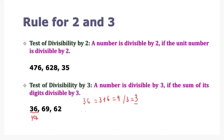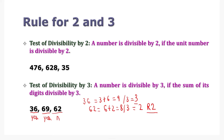What about 69? We add 6 plus 9, which is 15. 15 divided by 3 is 5 with no remainder, so 69 is divisible by 3. But what about 62? We add 6 plus 2, which is 8. 8 divided by 3 is 2 with a remainder of 2. Since there is a remainder, 62 is not divisible by 3.